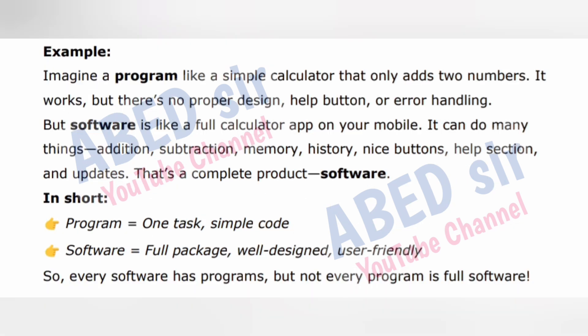For example, imagine a program like a simple calculator that only adds two numbers. It works, but there's no proper design, help button or error handling. But software is like a full calculator app on your mobile. It can do many things: addition, subtraction, memory, history, nice buttons, help section and updates. That's a complete product — software.